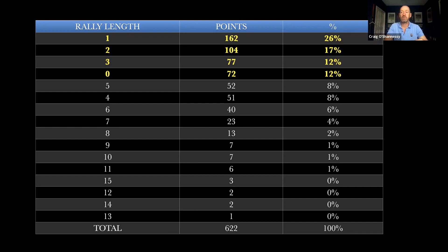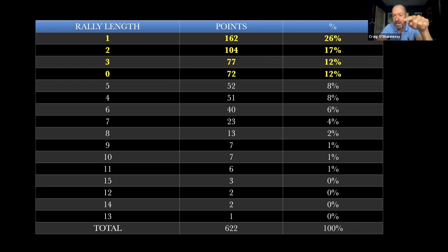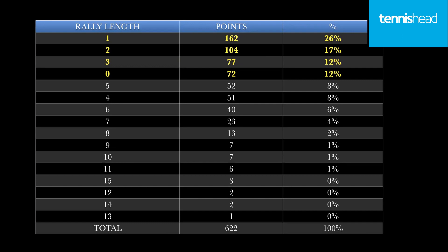A two-shot rally is the serve going in and the return coming back — sometimes a return winner, but quite often it's the server missing what I call the serve-plus-one shot. That's a great drill: hit a serve, the coach lets the serve go by, feeds an aggressive return, and you've got to play good defense. The same in a three-shot rally — that's the returner's next shot. We also had 72 double faults in this data set, making 12%. All the long rallies of 9 through 15 shots add up to just 3%. Your double faults are four times that.